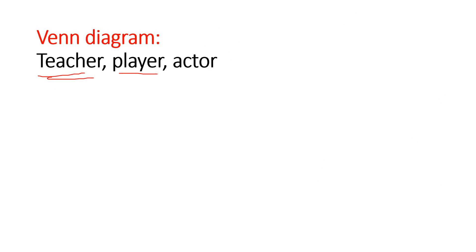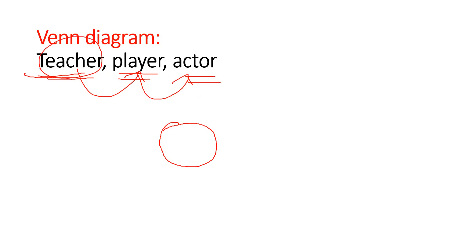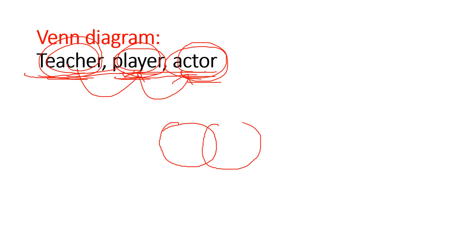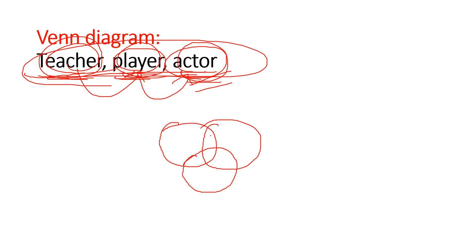Venn diagram question: Teacher, Player, Actor. We need to determine what Venn diagram fits these three. Some teachers can be players and some can be actors — they are overlapping categories. When a teacher is both a player and an actor, there is a three-way overlap. So the diagram shows all three circles with possible overlaps, and there could be a person in the common region of all three.